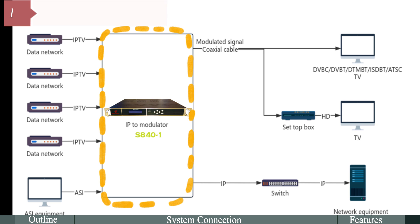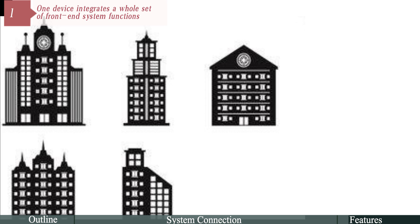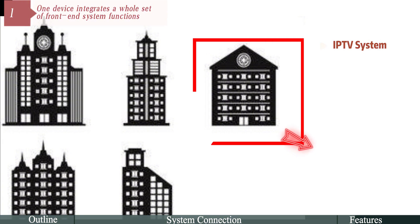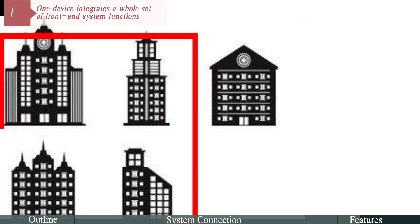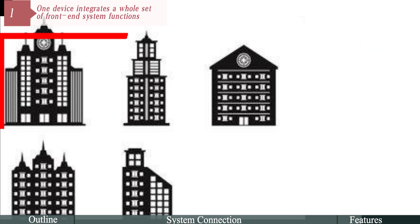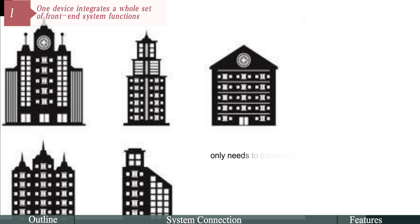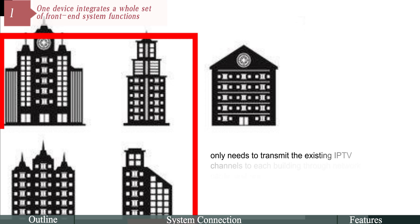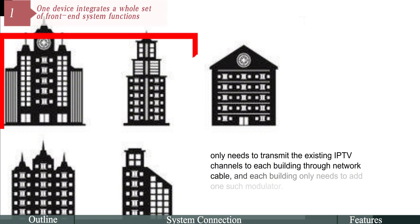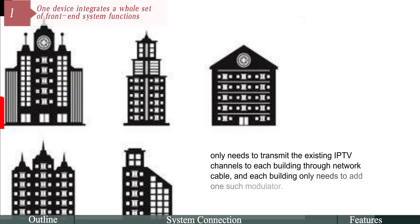One device integrates a whole set of front-end system functions. If you have a five-building project, like a campus or hospital, where one building has IPTV for the other four buildings and you only want to upgrade the existing HFC system, you only need to transmit the existing IPTV channels to each building through network cable, and each building only needs to add one such modulator.